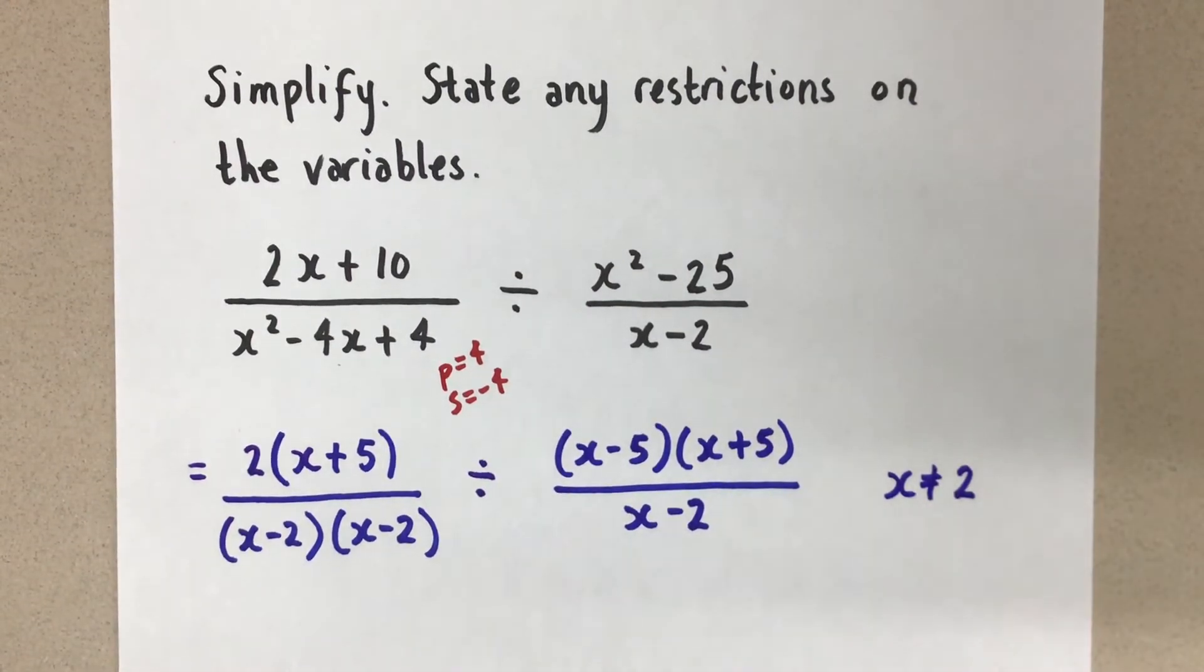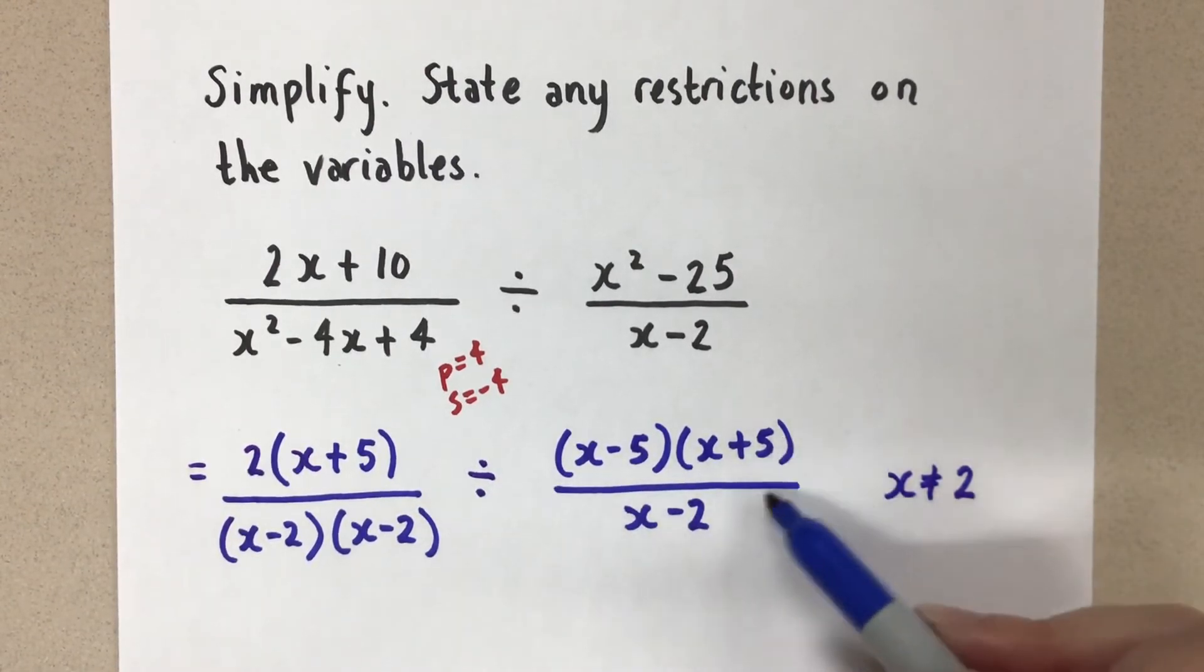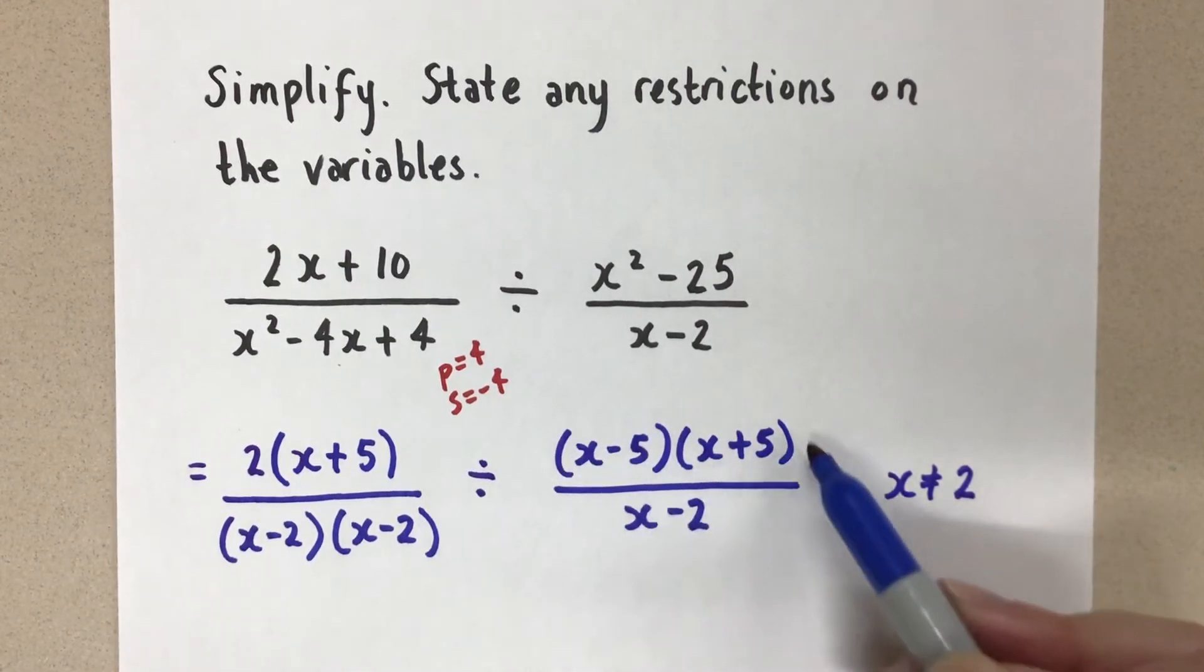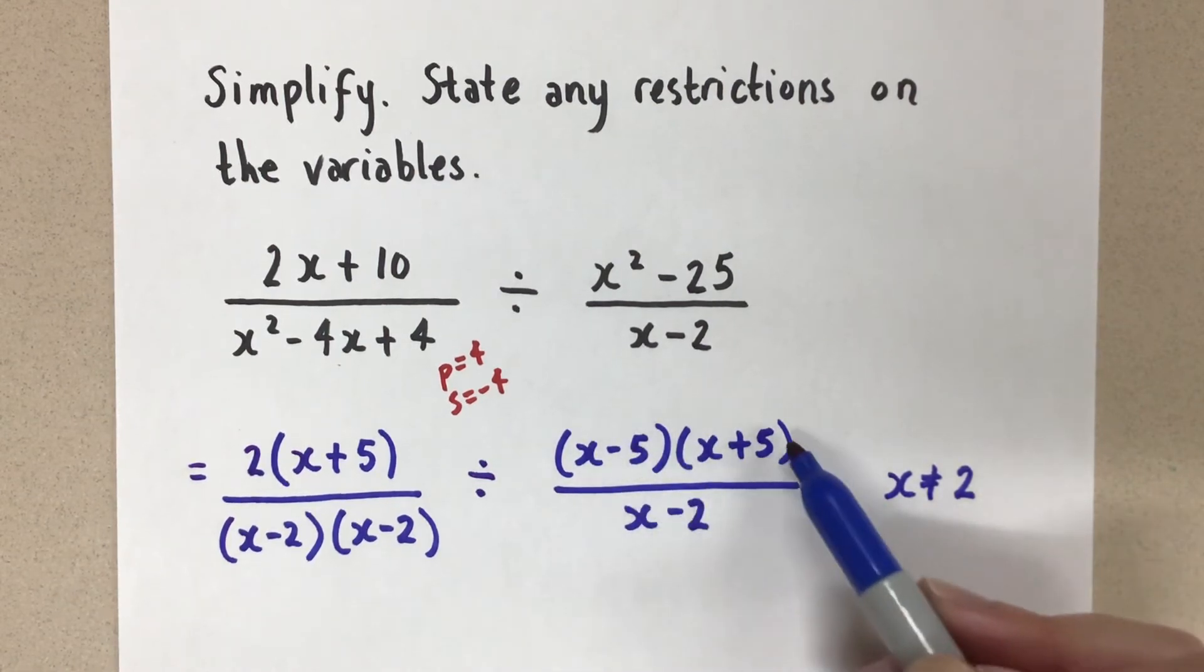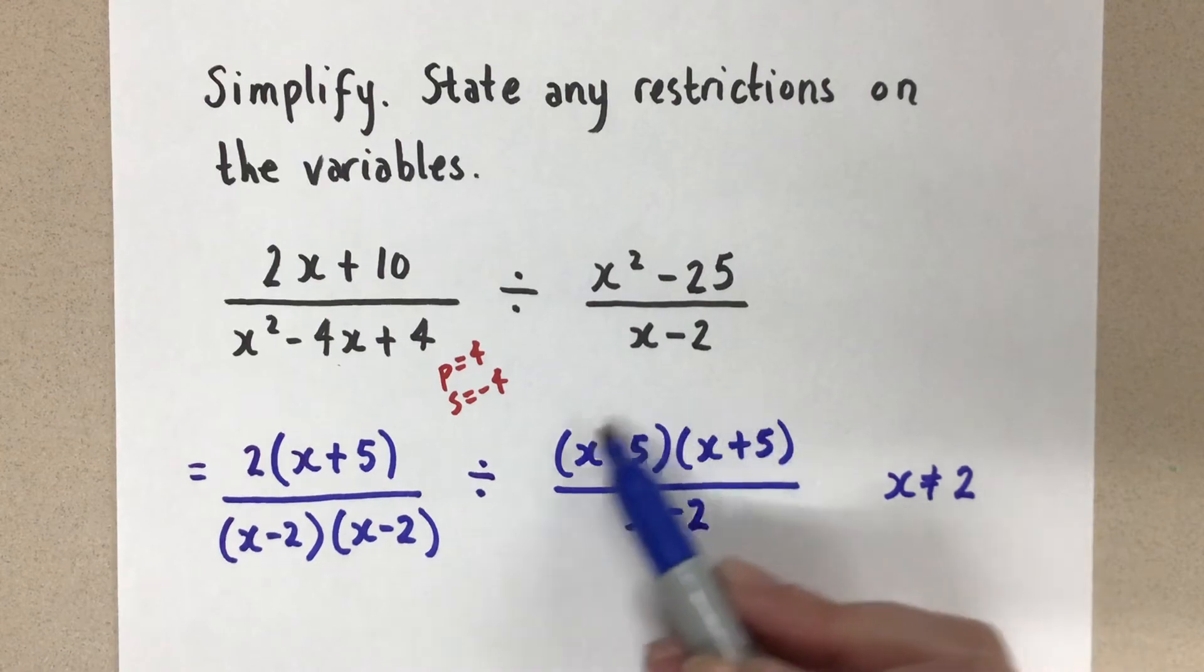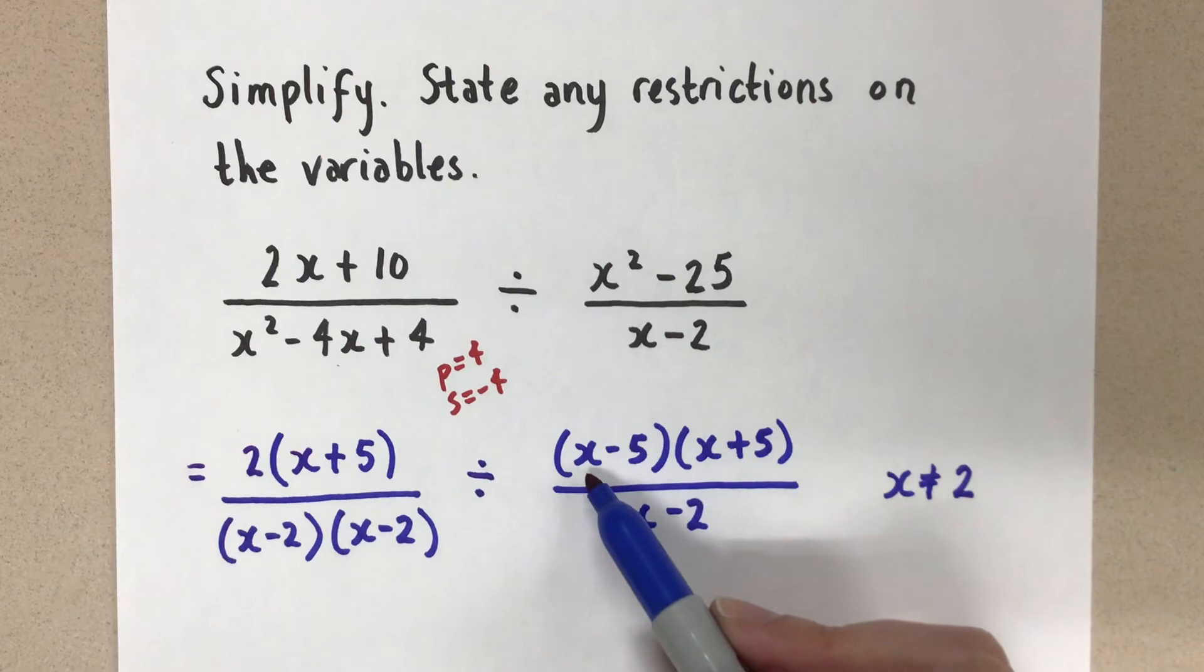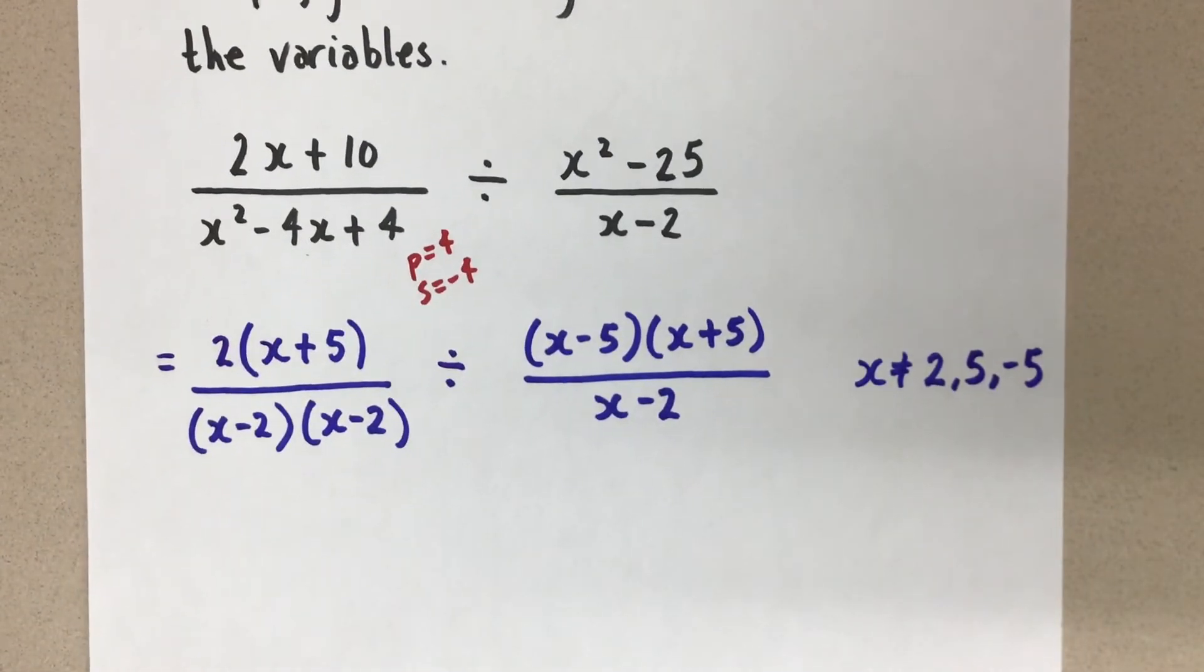But because we're doing division here, I know that in my next step I'm going to change this to multiplying, and I'm going to take the reciprocal here, which means this is going to become a new denominator. So I actually need to use this for a restriction as well when we're dividing rational expressions. So be careful. Remember that. Because we flip it, we need to take the restrictions from this part too. We can't have this equal 0 either. Otherwise, we can't take the reciprocal. So here, x can't be 5 or negative 5, and those are all the restrictions for our variable here.